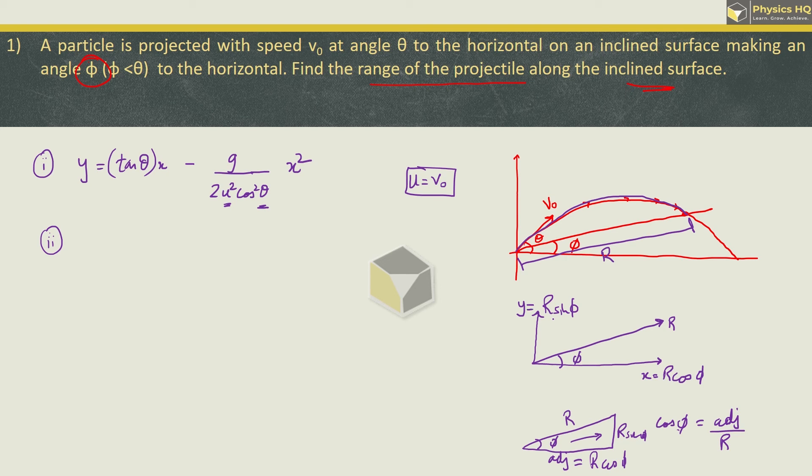So this is the vertical component along y-axis which is r sin phi and x is equal to r cos phi. x and y values we will put in the first equation. And let us check what we get.